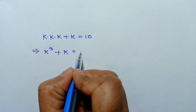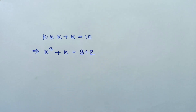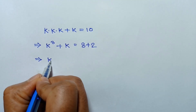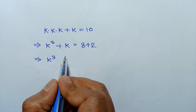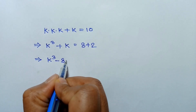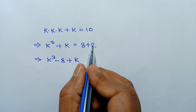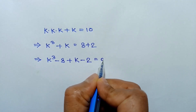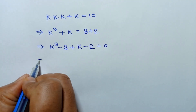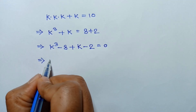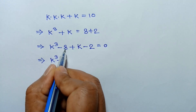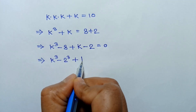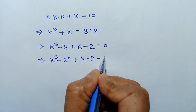This 10 can be written as 8 plus 2. Taking 8 to the left side we write negative 8, and taking 2 to the left side we write negative 2, so the right side is 0. So k cube minus 8 plus k minus 2 is equal to 0, where 8 is 2 to the power 3.